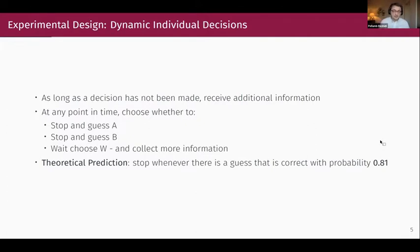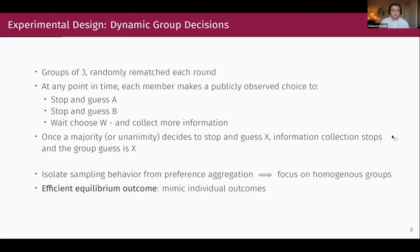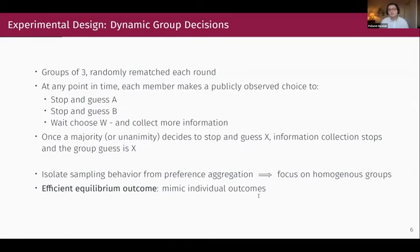The theoretical predictions for the individual case: information keeps arriving until the individual chooses either A or B. Given the parameter values used in the lab, theory predicts that to maximize expected returns, the participant should wait until the probability of either A or B reaches 0.81. For the group treatments, we have randomly formed groups of three. Participants can choose between waiting, choosing A, or choosing B, with homogeneous preferences across participants. Theory predicts the efficient outcome is to mimic the individual outcome — wait until 0.81 towards A or B.